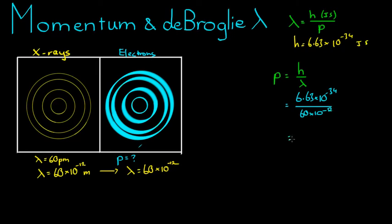I have 1.105, we'll just say 1.11 times 10 to the negative 23, and momentum is in kilograms times meters per second, s to the power of negative 1.